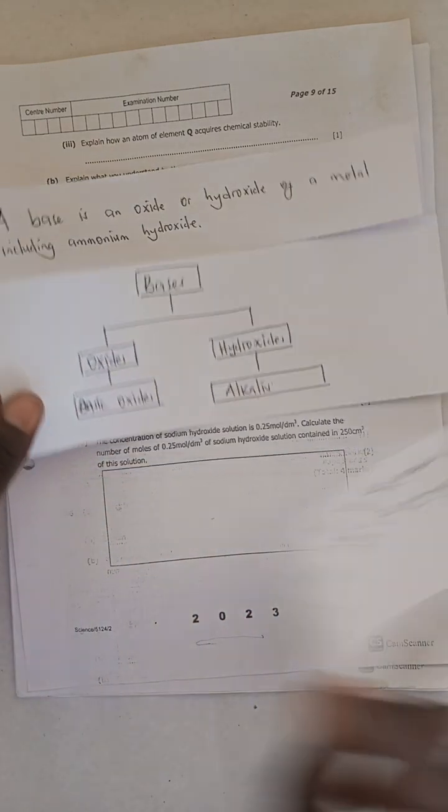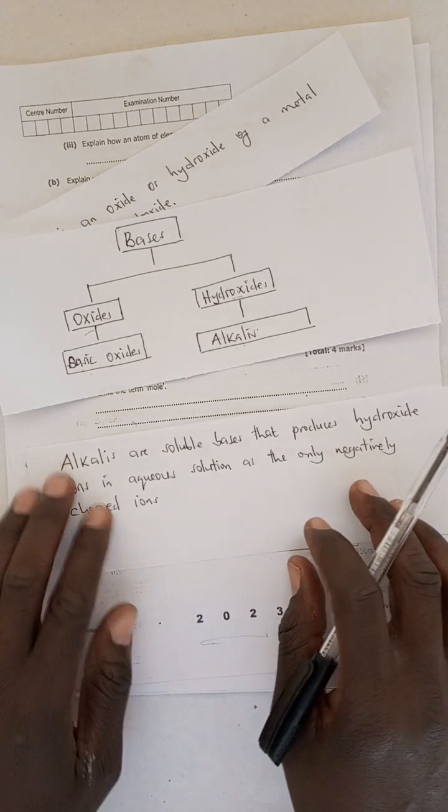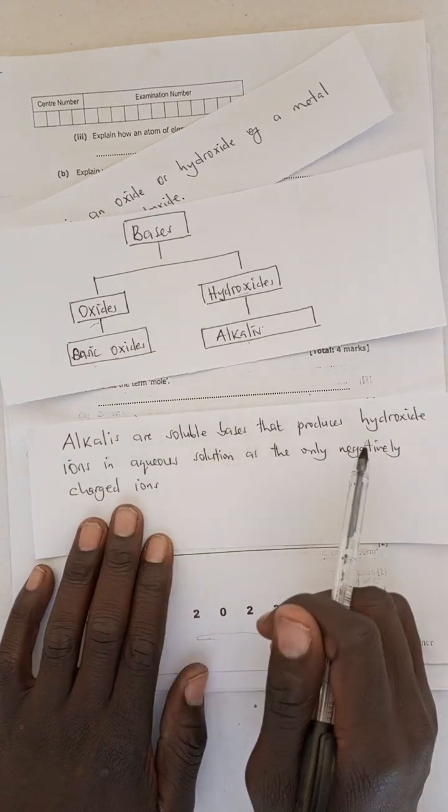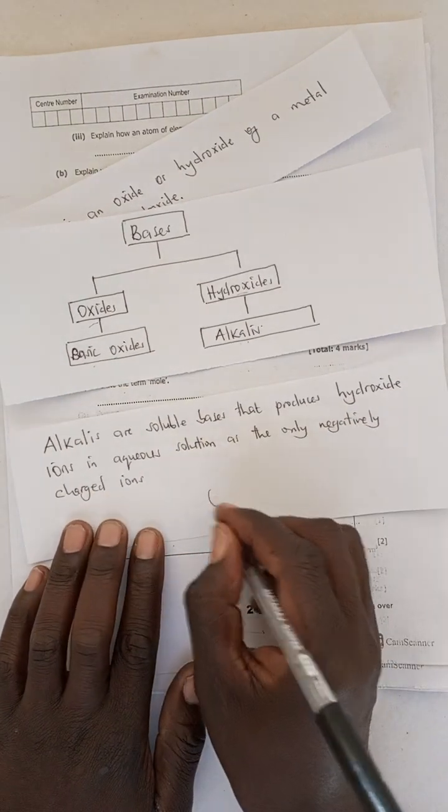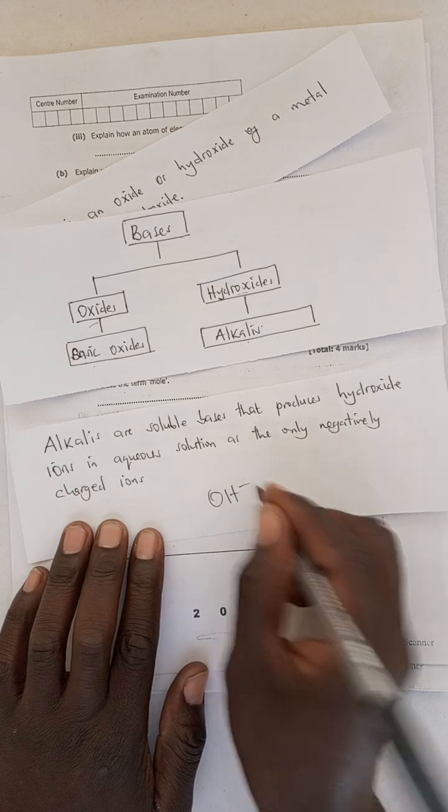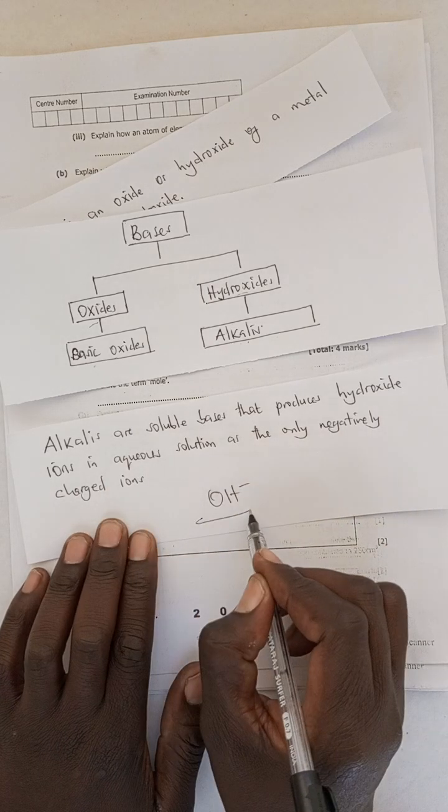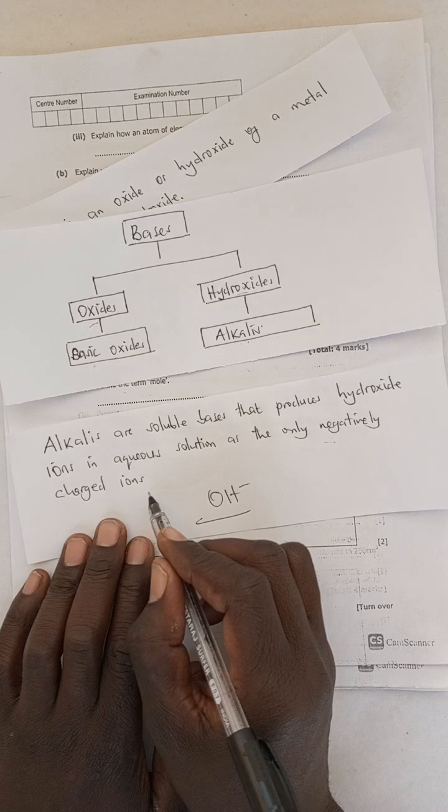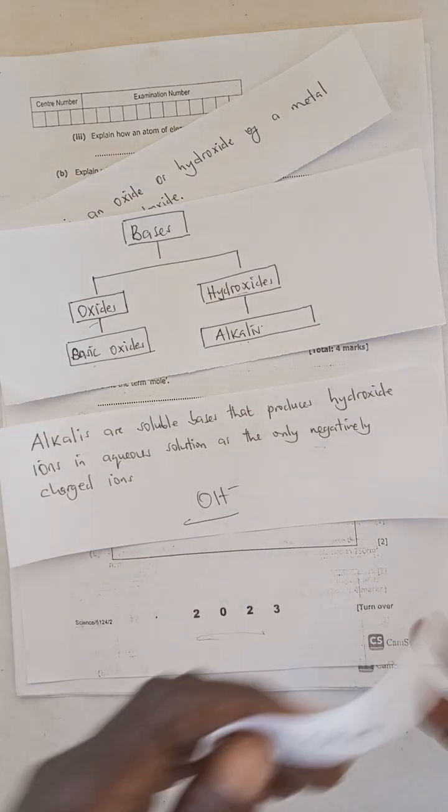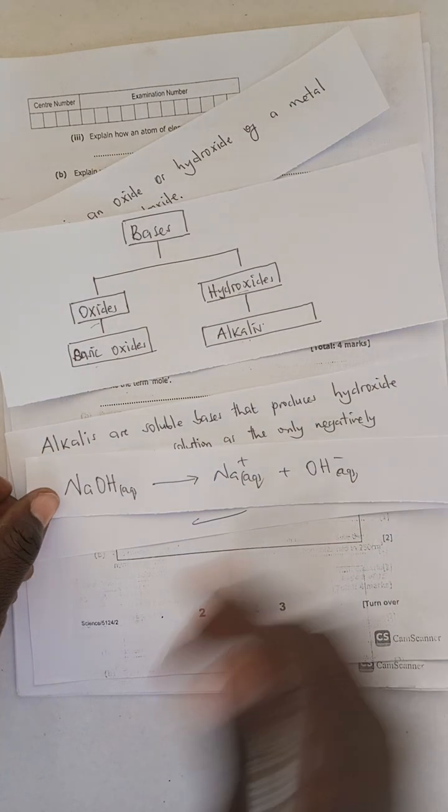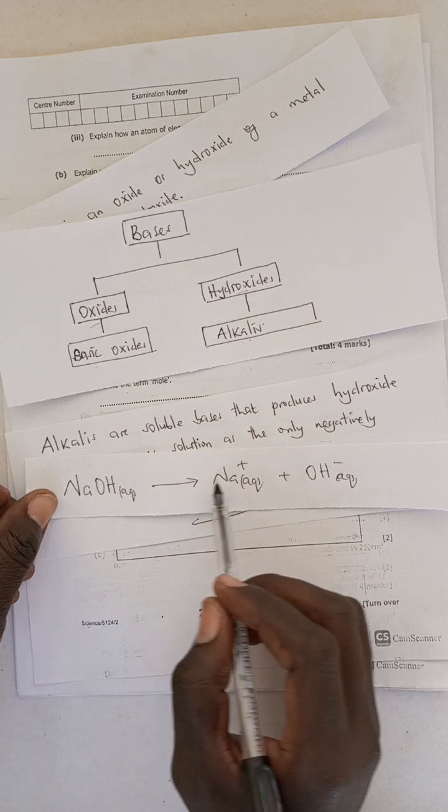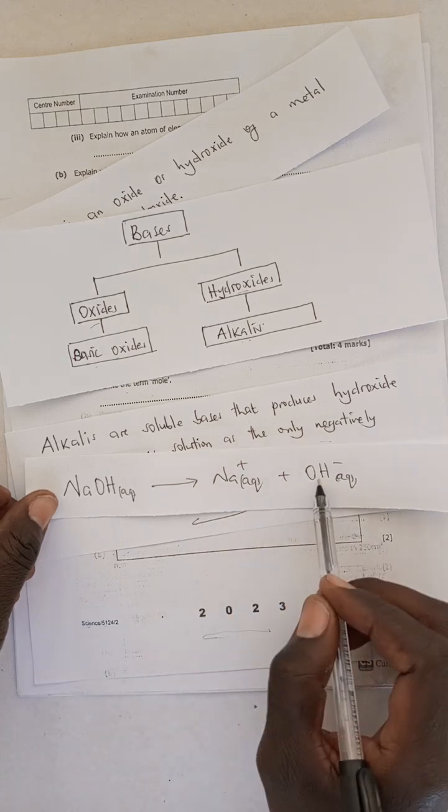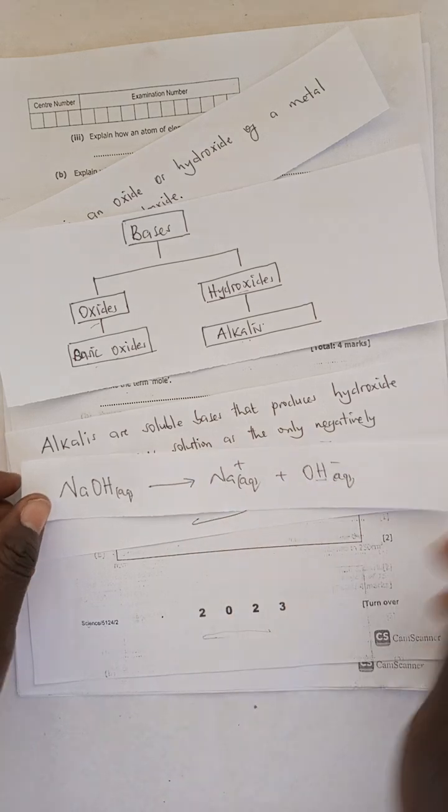Now what is an alkali? An alkali is basically a soluble base that produces hydroxide ions as the only negatively charged ions. So if we are to dissociate this, we would produce metallic ions and hydroxide as the only negatively charged ions.